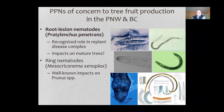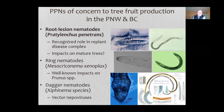One nematode that has come up more and more on our radar is the ring nematode, or Mesocriconema. This nematode is not an issue on apple, but is potentially an issue on cherry, and is well known to be an issue on peach and plum in California and the Southeastern United States. Dagger nematodes are not directly important in most cases, as population densities in our region are not high enough to cause damage, but they vector nepoviruses—tomato ringspot, tobacco ringspot, and cherry rasp leaf virus.